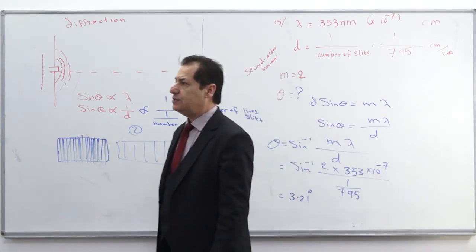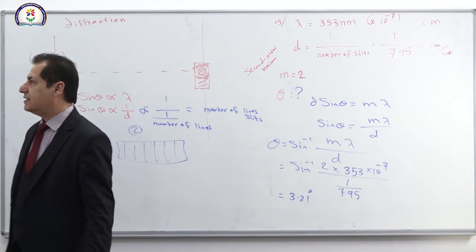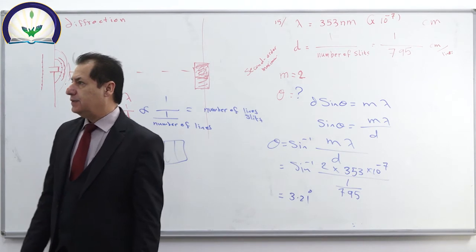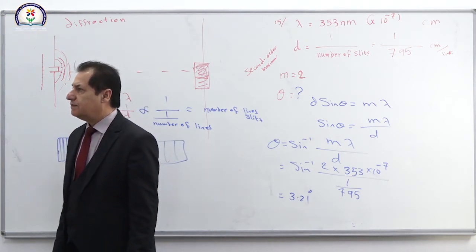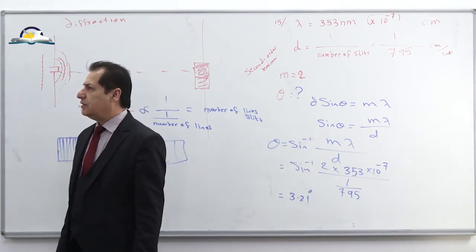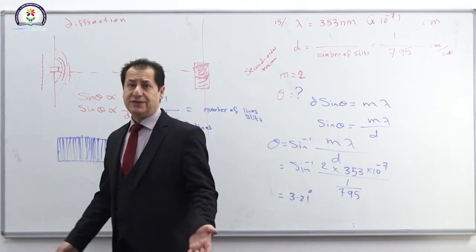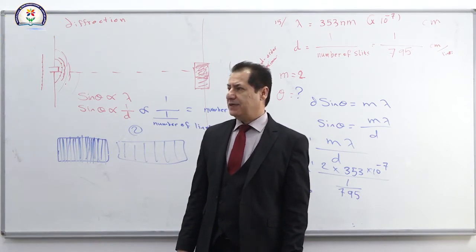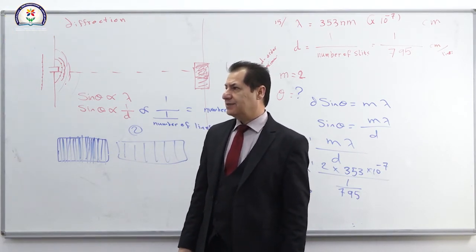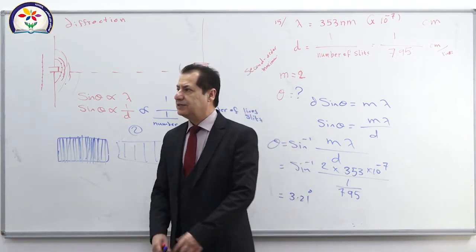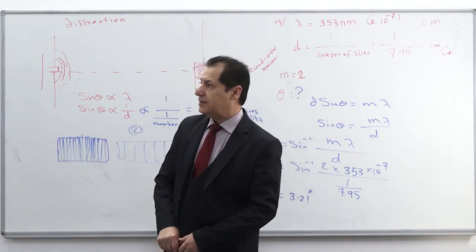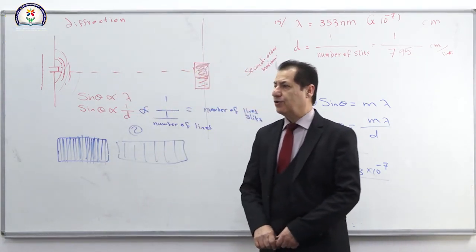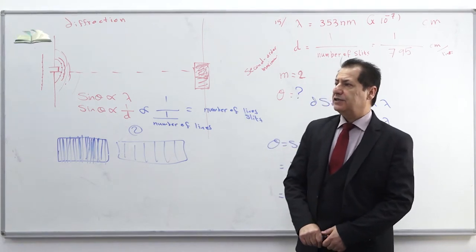Question number eighteen: why is laser light preferable to other sources for observing double slit interference? Because laser light is already coherent, so we don't need a special device to make it coherent. Light must be coherent for an interference pattern to form. An interference pattern is well defined with monochromatic, coherent light.